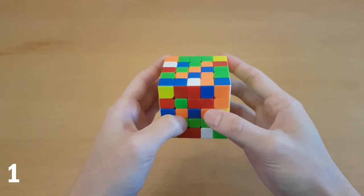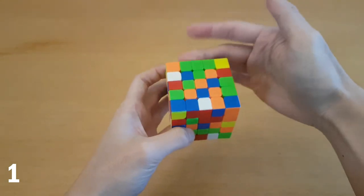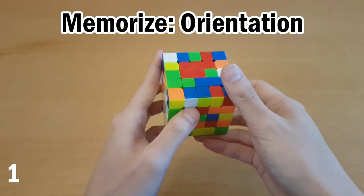It also helps to know the orientation of the pieces, because if I were to do a D move, that wouldn't work. I have to remember that white's over here. So instead of memorizing left or right, I usually go for where the white color is.